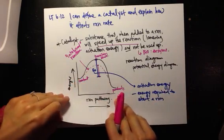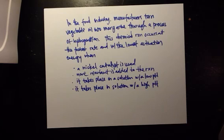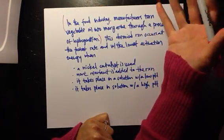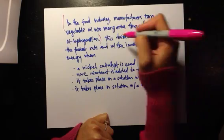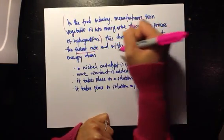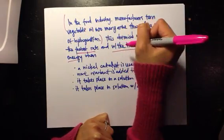So here is your example question. In the food industry, manufacturers turn vegetable oil into margarine through a process of hydrogenation. This, not really necessary, it's just extra information. Here is your real question: This chemical reaction occurs at the fastest rate and with the lowest activation energy when...